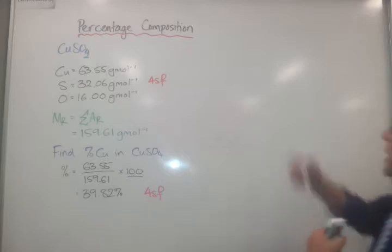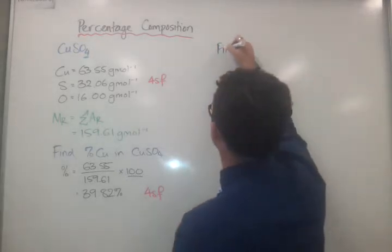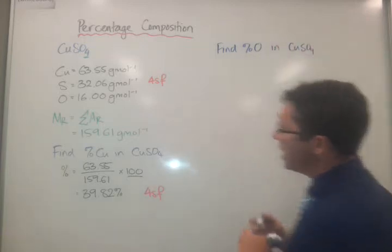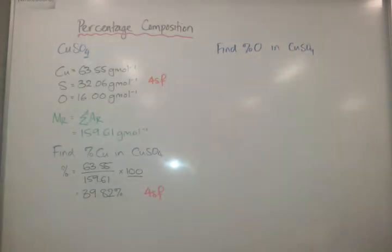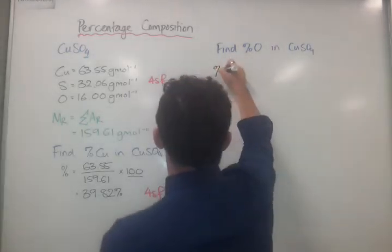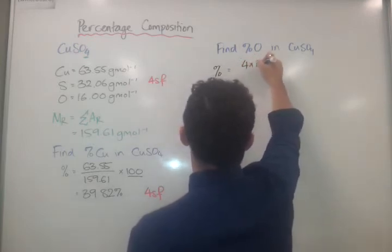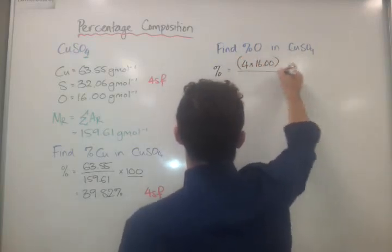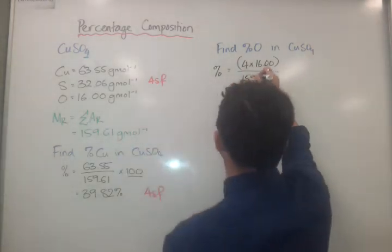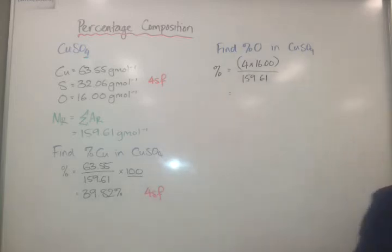But what about oxygen? So we're now going to find the percentage of oxygen in copper sulfate. So for this one here, we need to go, how many oxygens are in copper sulfate? And there's four of them. So I've already got my molar mass, so let me calculate that again. The percentage is equal to 4 times 16.00. It says there's four oxygens. It's divided by 159.61. And again, those arm calculators will tell me that is 40.10.